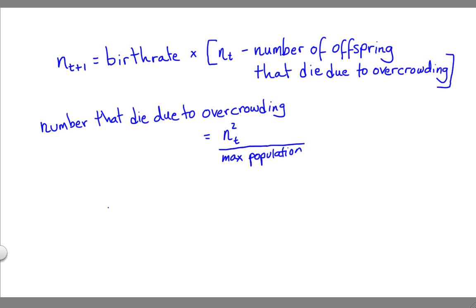This model is a nonlinear interaction. The n sub t squared term comes from the fact that there are, on the order of, n squared possible pairwise interactions between the individuals.